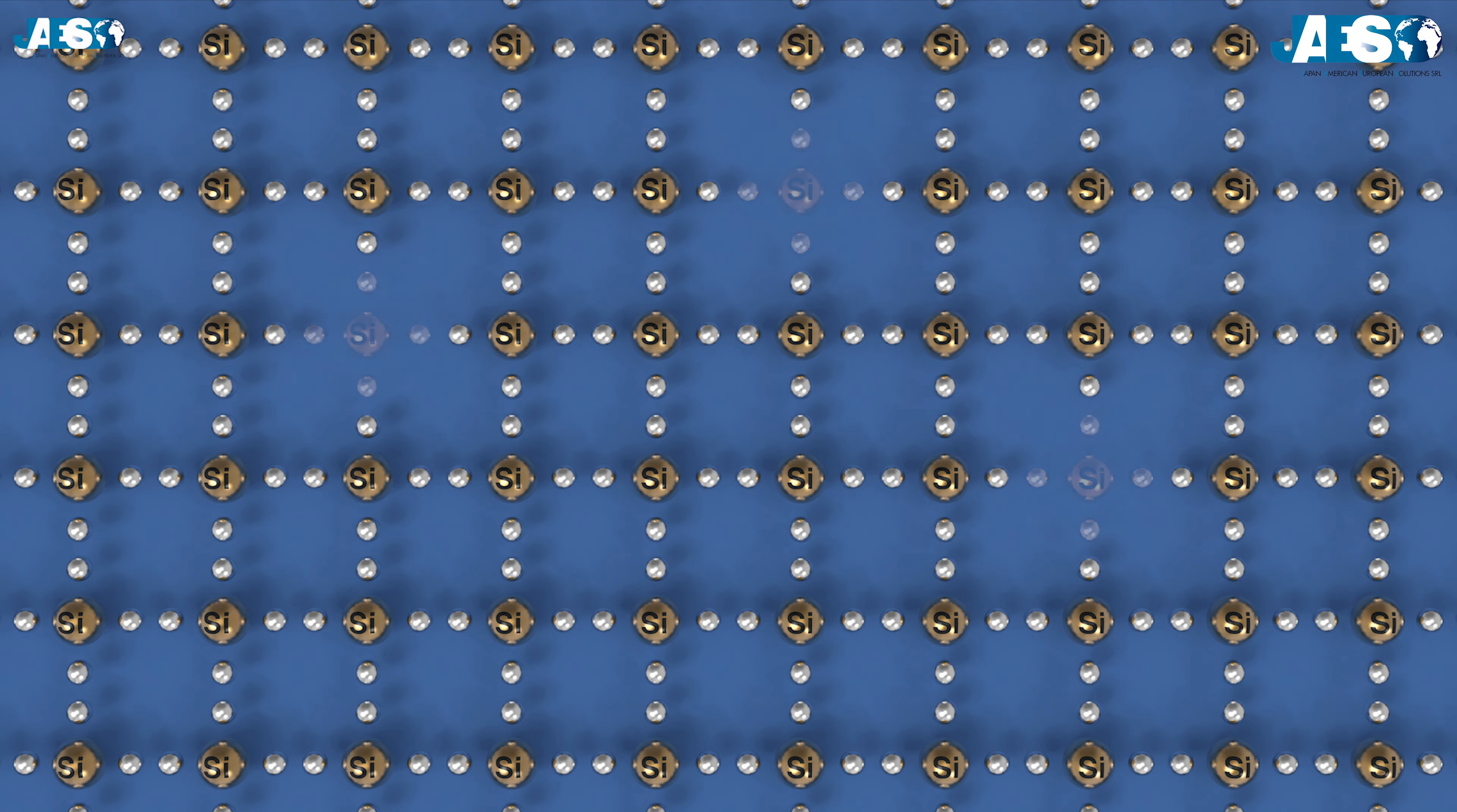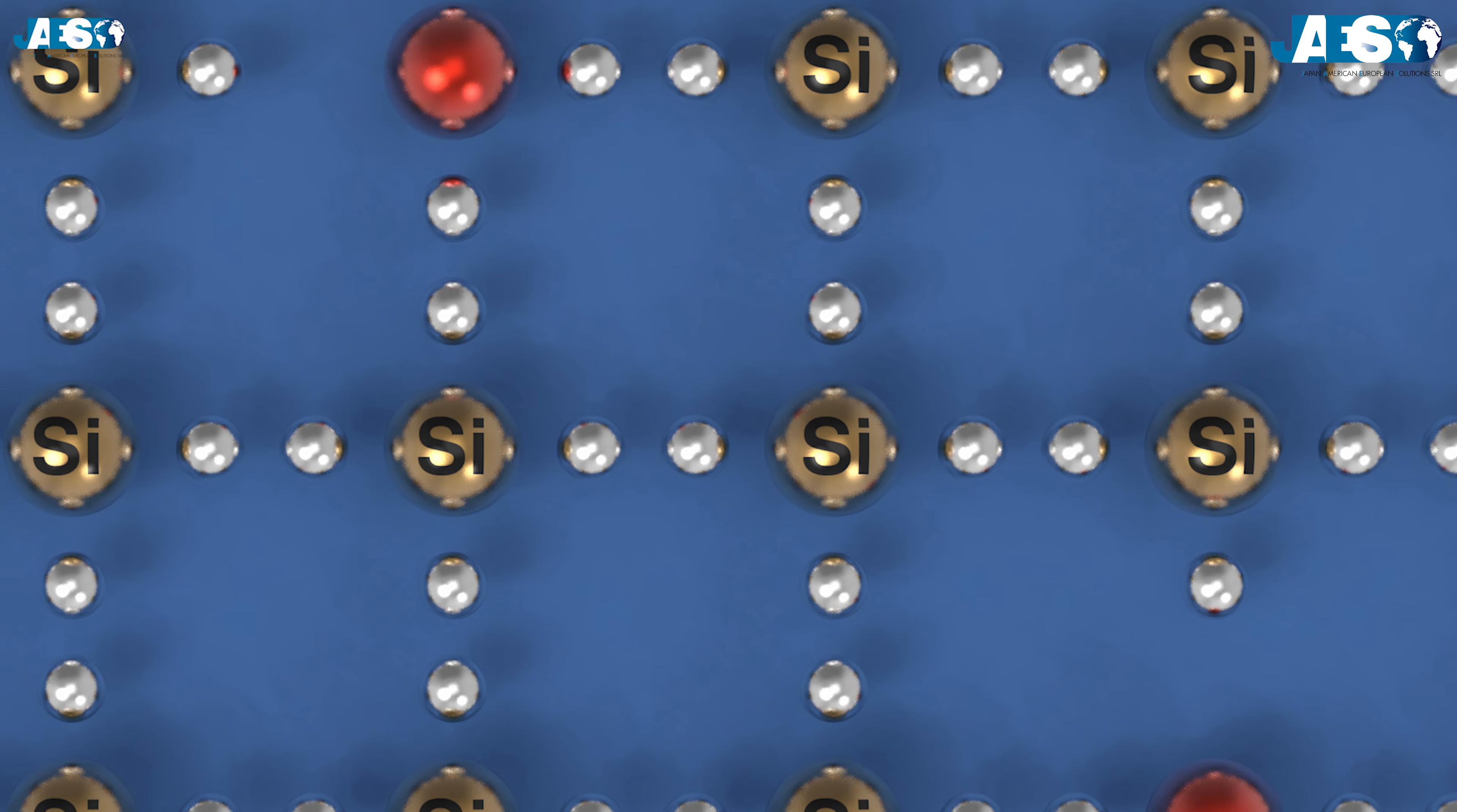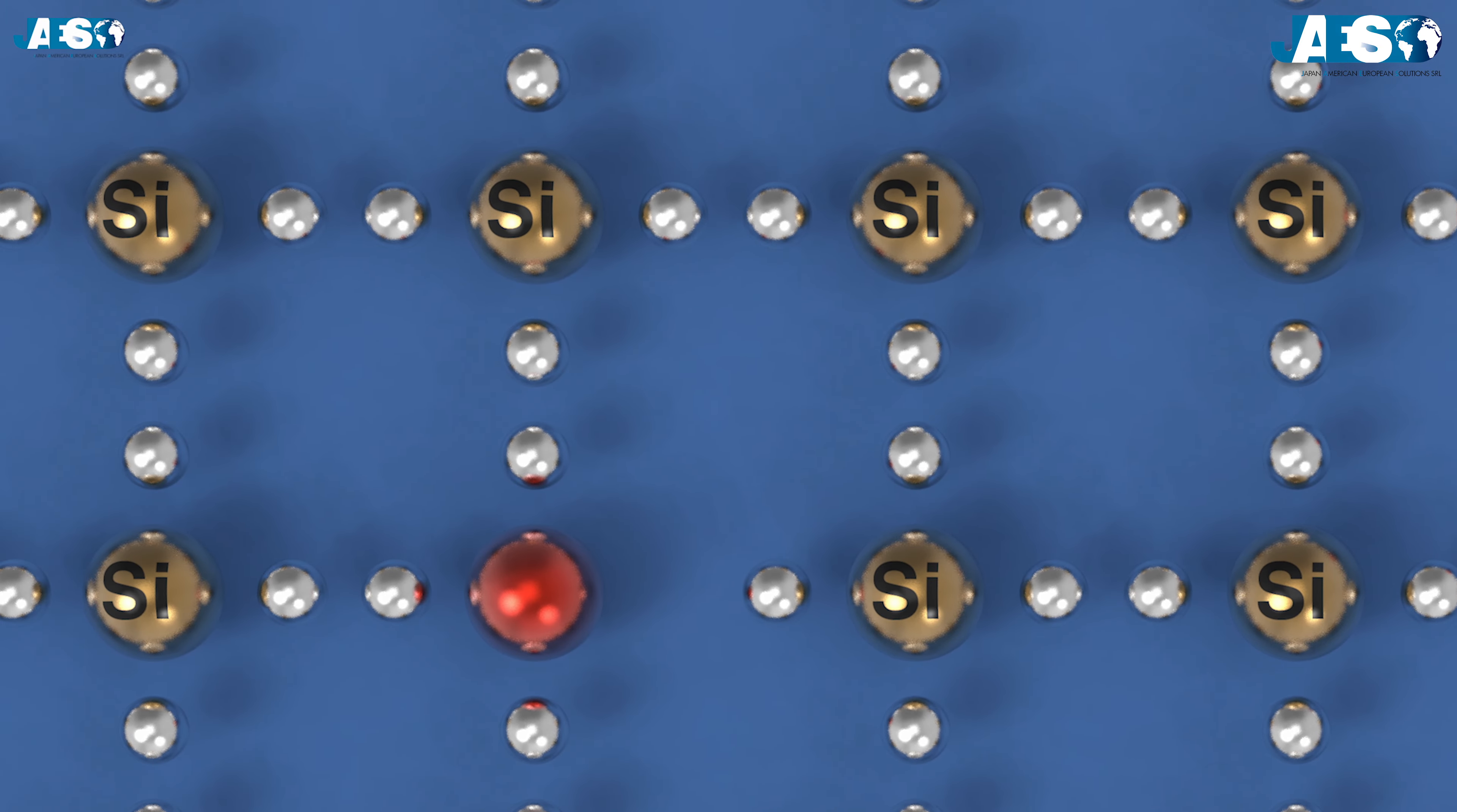Using sophisticated technologies, atoms of different elements are inserted into the purest silicon. This is called doping. In this way, the presence of impurities in its crystal lattice allows the silicon to become a semiconductor.